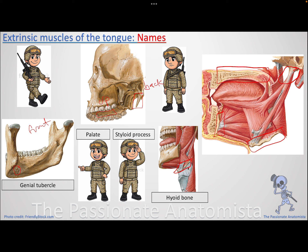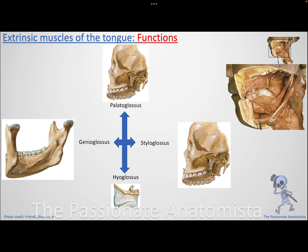Each extrinsic muscle is named starting with the bone and ending in '-glossus.' The genioglossus attaches to the genial tubercle and protrudes the tongue forward. The palatoglossus attaches to the palate and brings the tongue up. The styloglossus attaches to the styloid process and retracts the tongue back. The hyoglossus attaches to the hyoid bone and depresses the tongue. Function follows the direction of attachment.